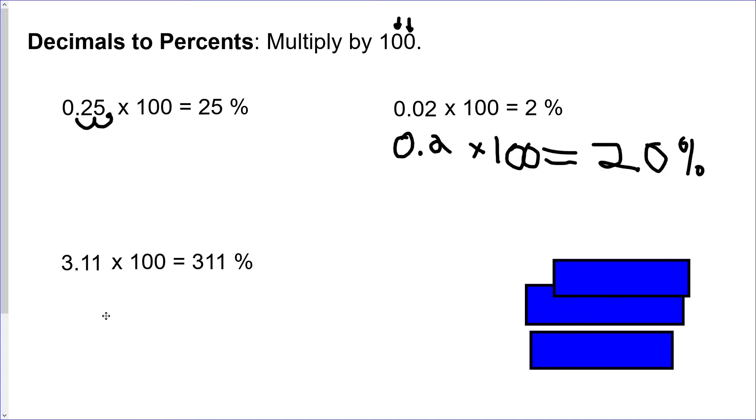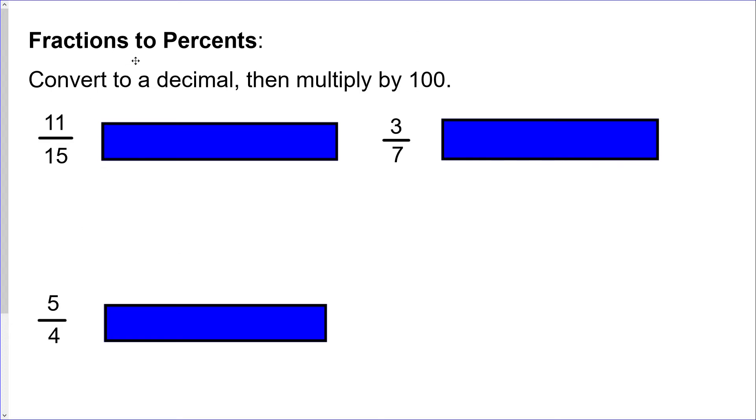On to the next one: fractions to percents. The method you're wanting to use here is to convert to a decimal first and then multiply by 100. Hopefully you're quite comfortable and remember well how to convert from a fraction to a decimal. It's fairly straightforward. What you do first is take your numerator divided by the denominator.